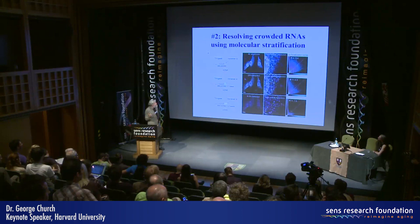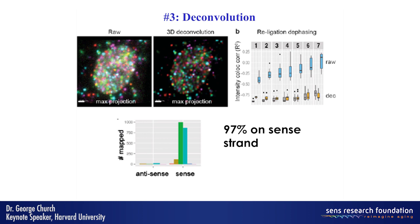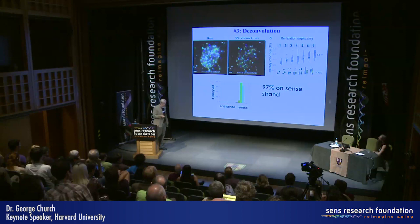Then there is deconvolution. In this case, we're looking at randomly primed transcripts throughout the cell. You can see about a tenfold improvement of resolution due to deconvolution. These are three-dimensional images — this is a projection, but we have the full three-dimensional data, which is important. One of our quality assessments is that we search for both strands of the RNA. We know from previous sequencing which strand tends to be used, and we see about 97% of our reads placed onto the sense strand — the correct strand. The other 3% could be real or artifacts, but the point is it's very high quality.